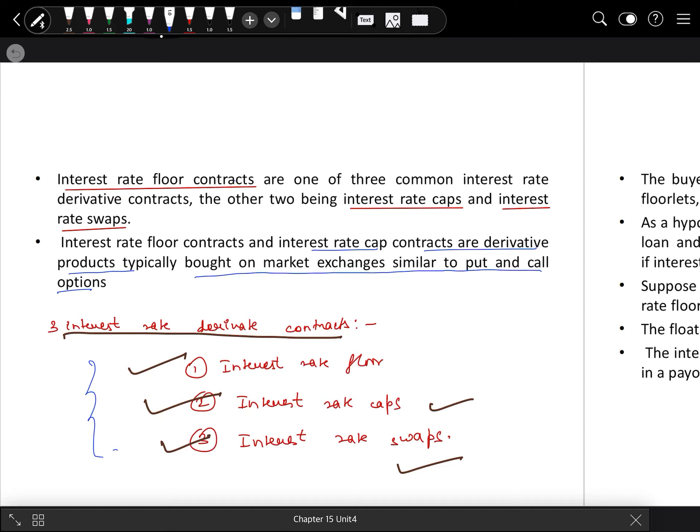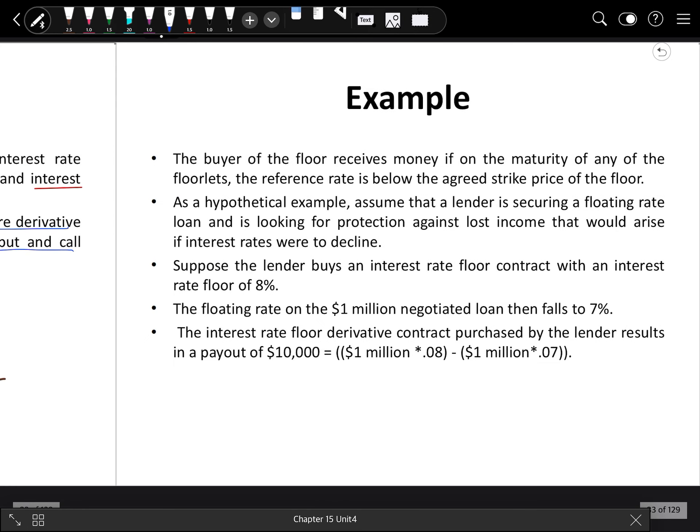Now suppose that the buyer of a floor receives money if on the maturity of any of the floorlets, the reference rate is below the agreed strike price. As a hypothetical example, assume that a lender is securing a floating rate loan and is looking for protection against lost income that would arise if the interest rate were to decline. Suppose the lender buys an interest rate floor contract with an interest rate floor of 8%.